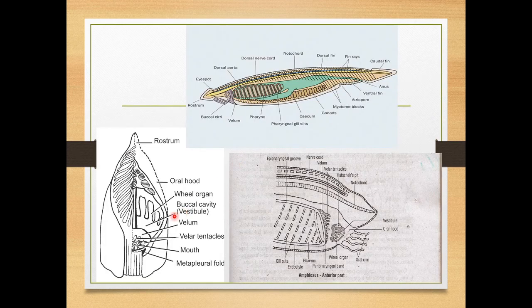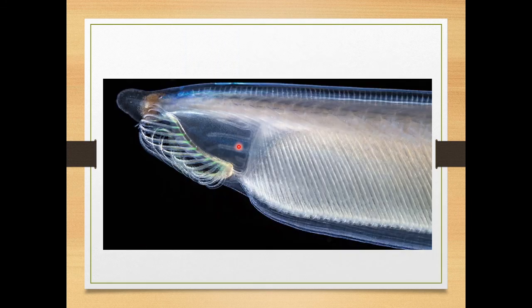The tentacular processes around the enterostome are called velar tentacles. Running along the roof of the vestibule there is a glandular mucus-secreting groove called Hatschek's groove or Hatschek's pit. This concludes the external morphology.